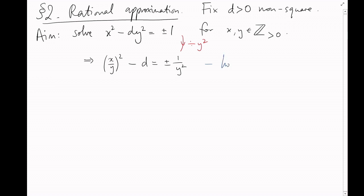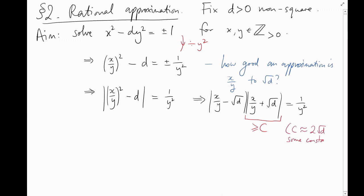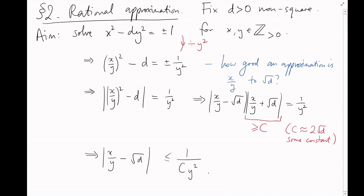Suppose this equation holds — how good an approximation must x/y be to √d? We can factor the left-hand side as a difference of two squares, giving |x/y − √d| × |x/y + √d| = 1/y². Since x/y is approximately √d, the second factor is bounded below by some constant c, close to 2√d. So |x/y − √d| is at most 1/(cy²).